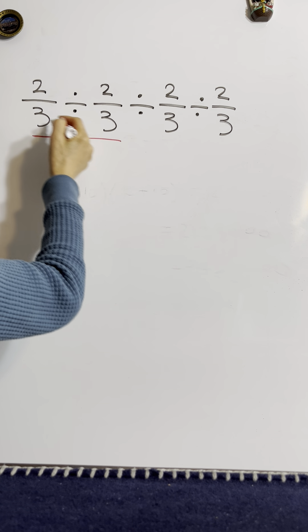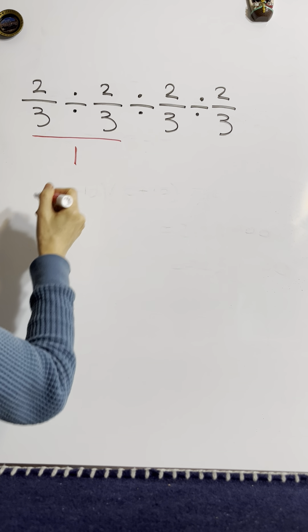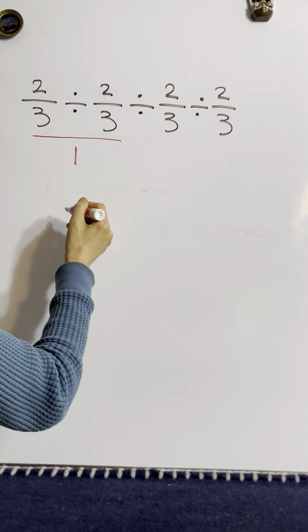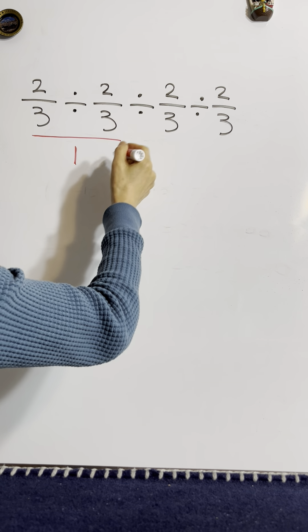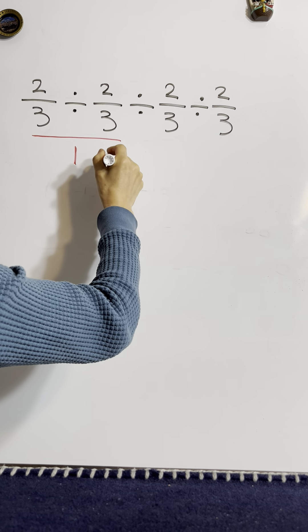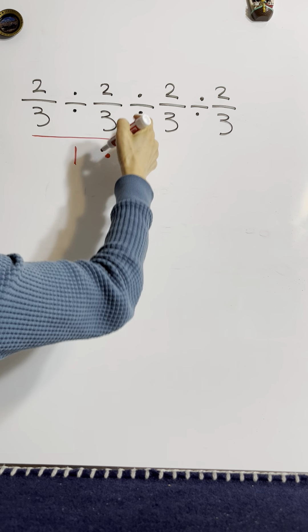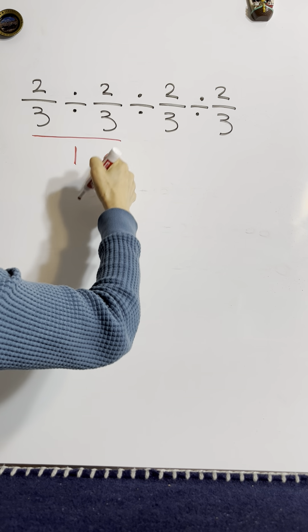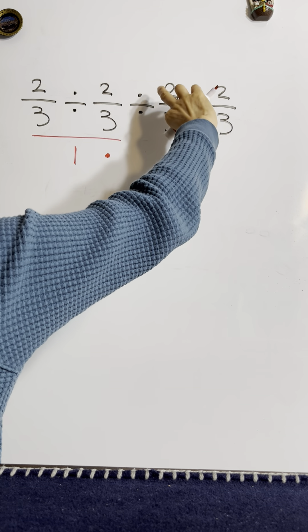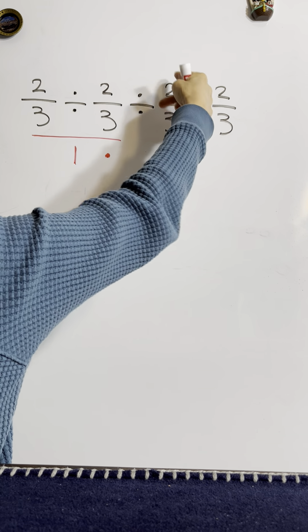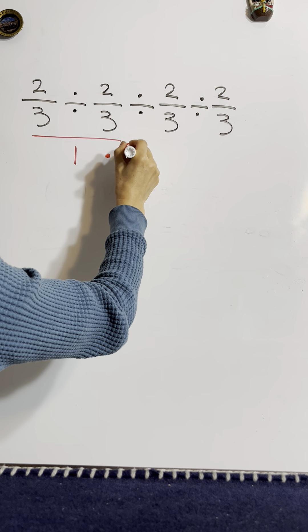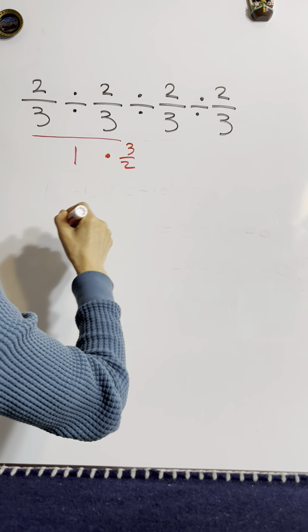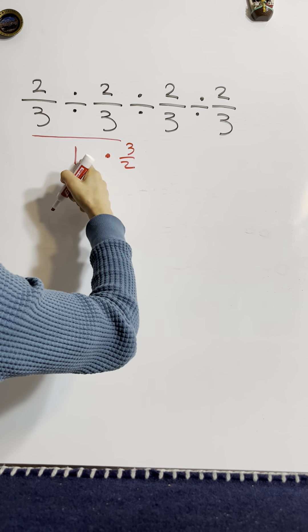But the first two divisions, yes, it is one. But here, when one divided by two over three, we change division into multiplication. We take the multiplicative inverse of two over three, which is three over two. So one times anything will be anything.